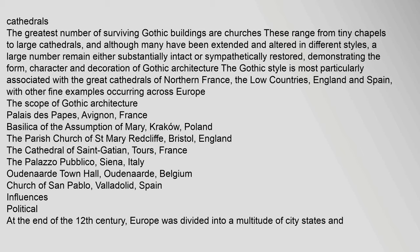The Gothic style is most particularly associated with the great cathedrals of northern France, the low countries, England and Spain, with other fine examples occurring across Europe. Examples of Gothic architecture include the Palais des Papes in Avignon, France; the Basilica of the Assumption of Mary in Krakow, Poland; the Parish Church of Saint Mary Redcliffe in Bristol, England; the Cathedral of Saint Gatian in Tours, France; the Palazzo Publico in Siena, Italy; Odenard Town Hall in Belgium; and the Church of San Pablo in Valladolid, Spain.